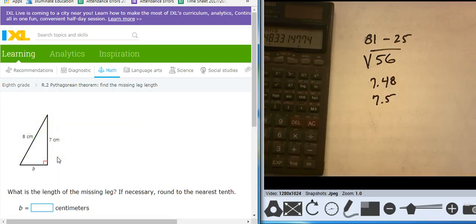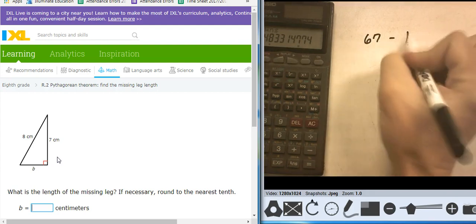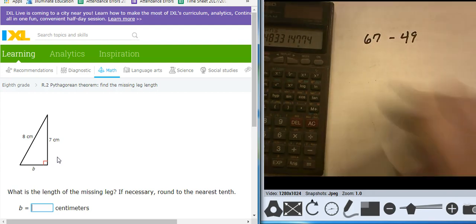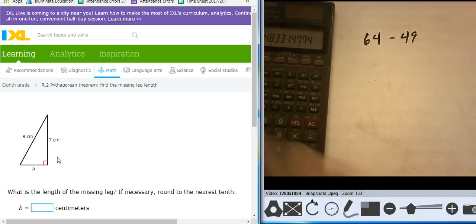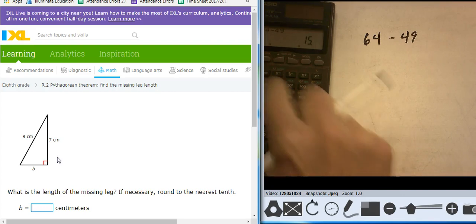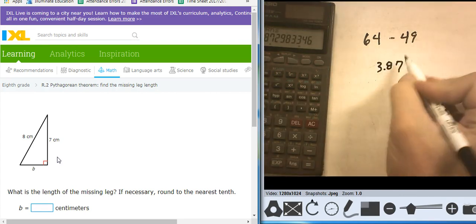Now I'll do one more of these, and I should be pushing 80 by then. 8 squared is 64 minus 49. I don't know why I wrote 67, 64 minus 49. Square root of 15 is 3.87, which rounds to 3.9.